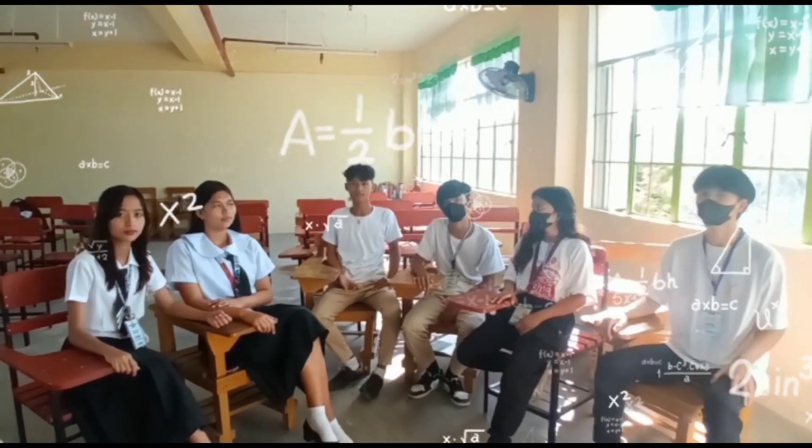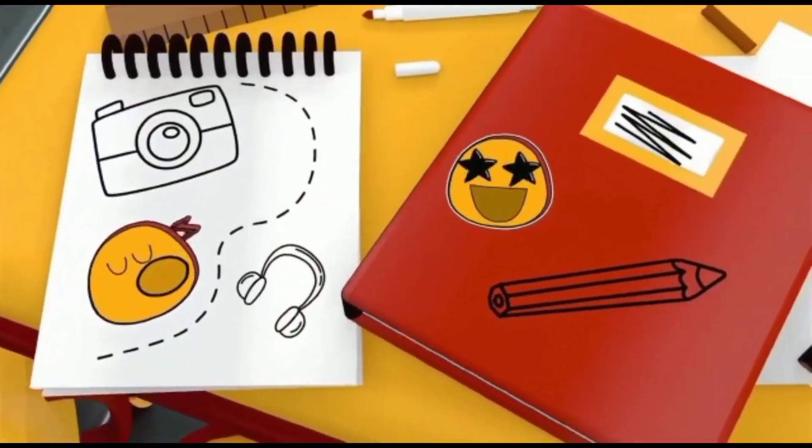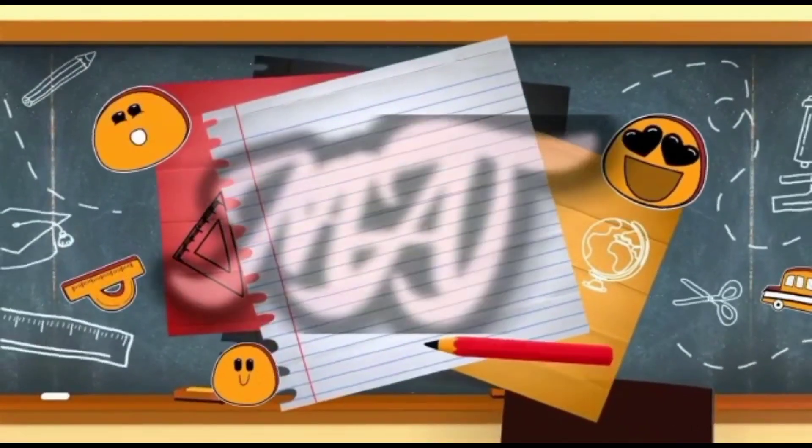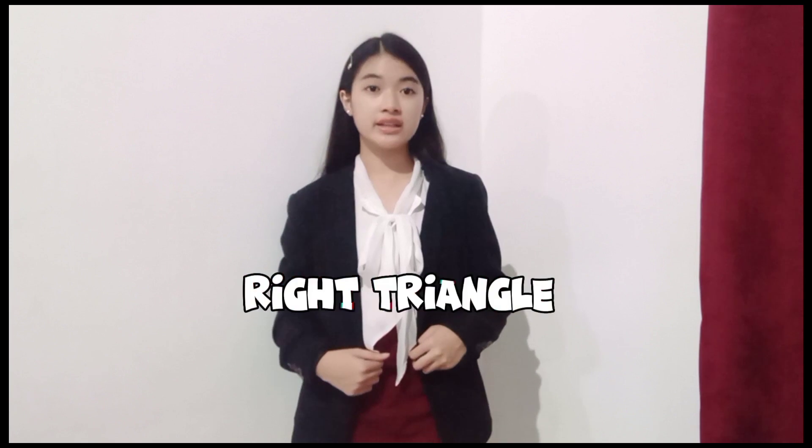It's SOHCAHTOA. Do you know the two kinds of triangle? The first one is a right triangle and the second one is an oblique triangle. A right triangle is a triangle with a right angle. An oblique triangle is any triangle that is not a right triangle.